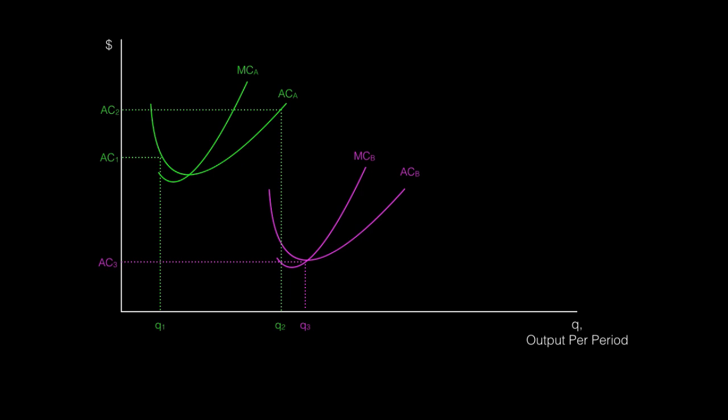However, when demand picks up again and she increases production out to Q4, her per unit costs once again increase as she hires more workers, but is not able to expand the manufacturing facility in the short run.